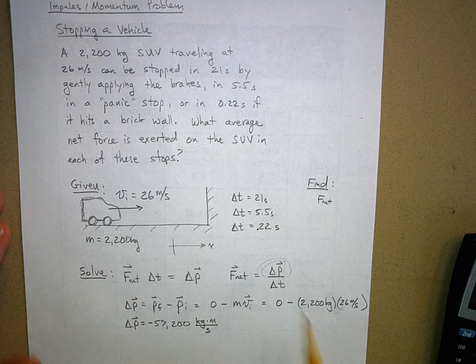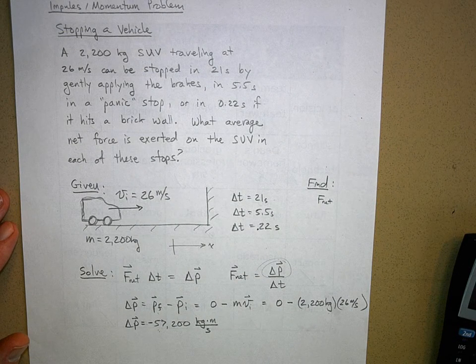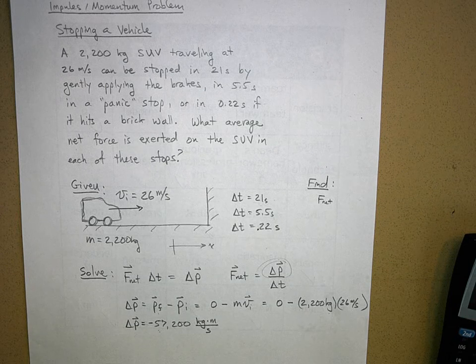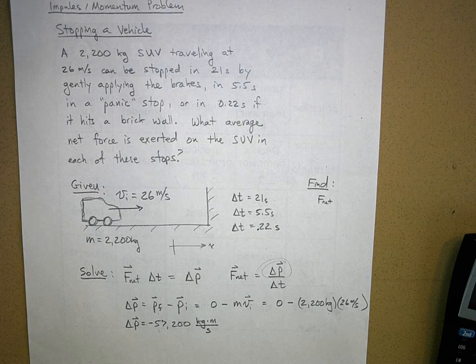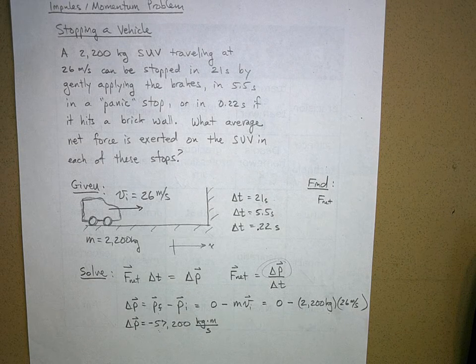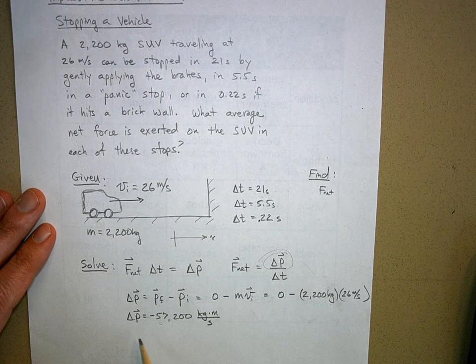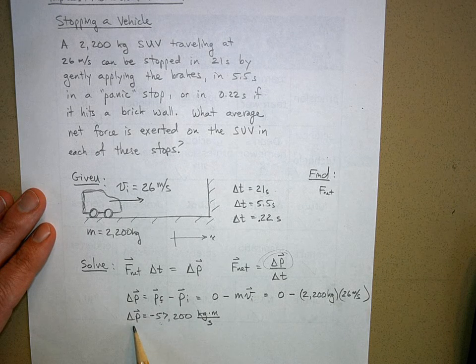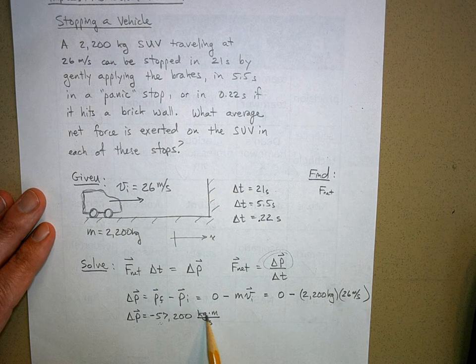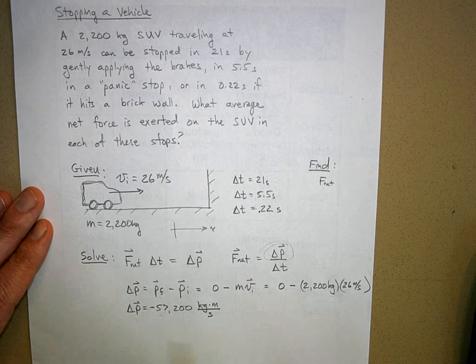I forgot the negative, did you forget the negative when you worked it? I caught my mistake, but it is negative. Now what does that negative mean? Whenever you have a vector quantity, what does the negative mean? It refers to the direction, yes, and it's in the negative direction. So delta p is negative 57,200 kilograms meters per second.